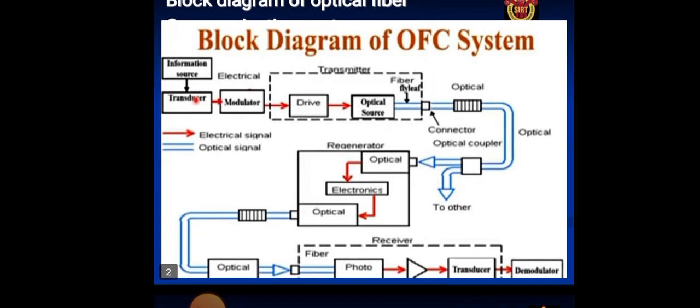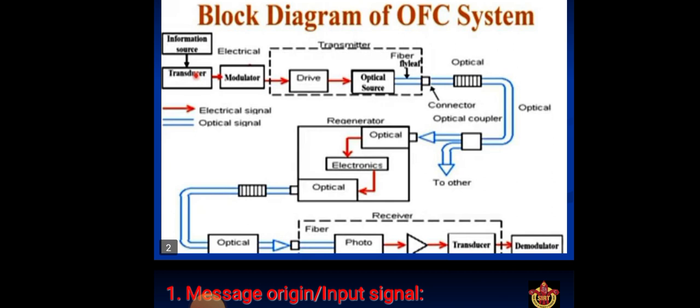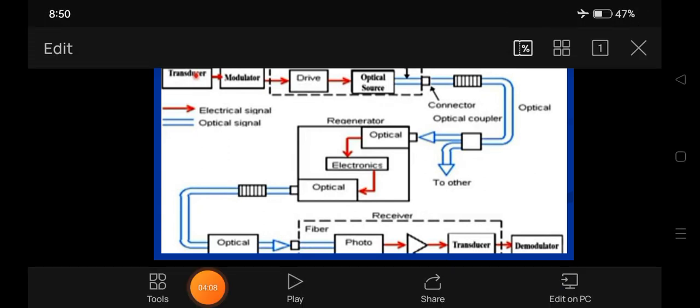The receiver receives the optical signals. These optical signals are detected by photo detectors and transducer. These optical signals are converted into electrical signals, then demodulated to get the original signal of the optical fiber communication.